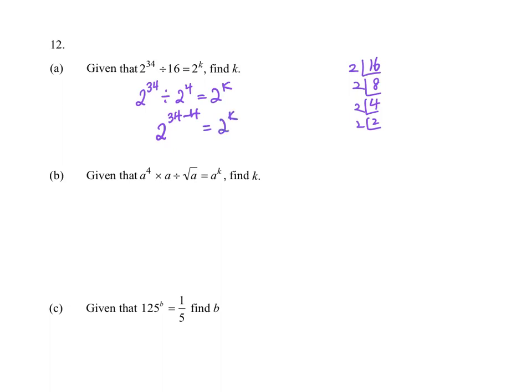So therefore, what is the power k? This is 2 to the power of 30 equals 2 to the power of k. Comparing, k will be 30.